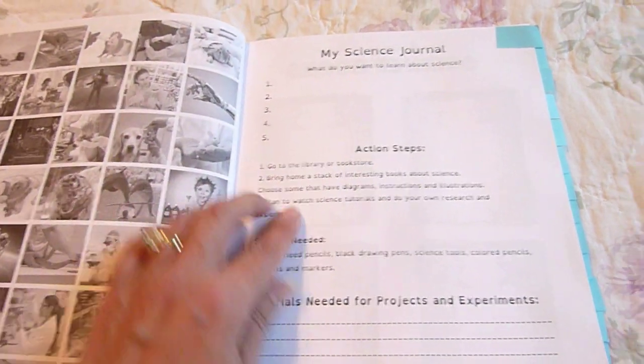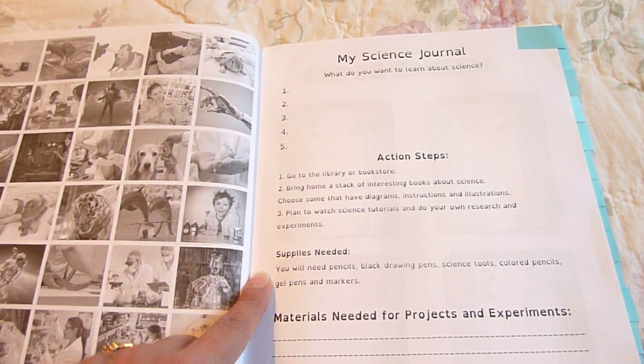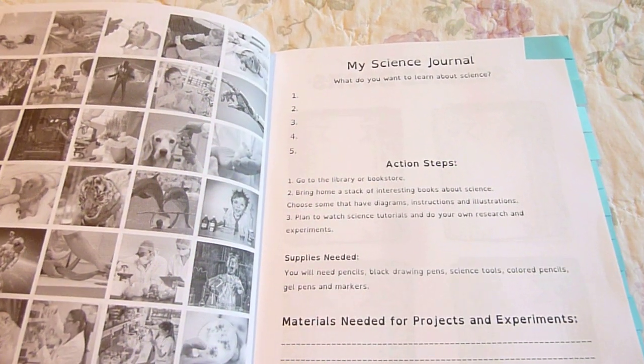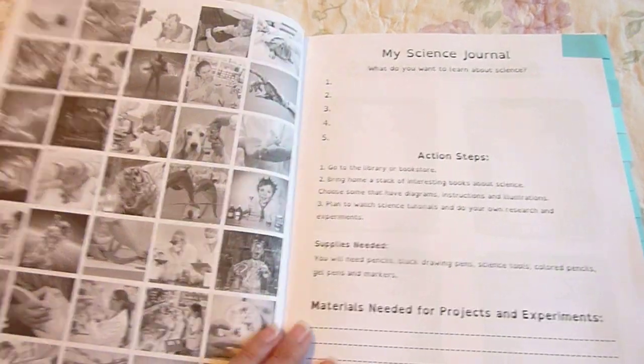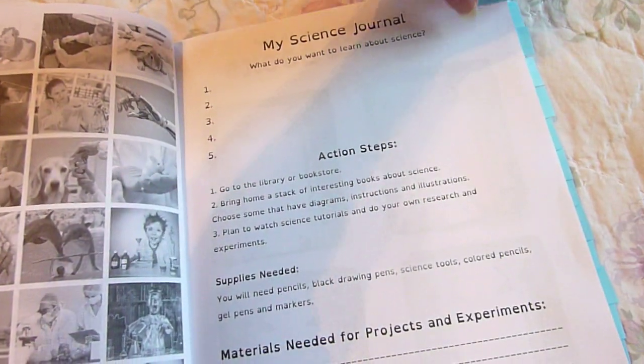So right here is my science journal, What Do You Want to Learn? And they can write that, and they have their action steps, supplies needed, and materials needed for projects and experiments. And here are all the pictures that are going to be in the back, and we'll get to that in a little bit.